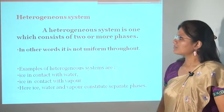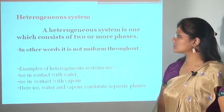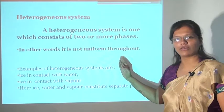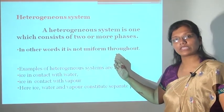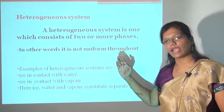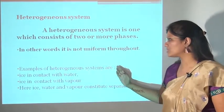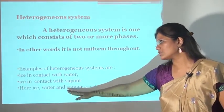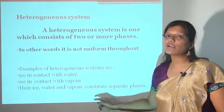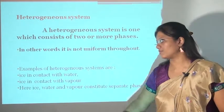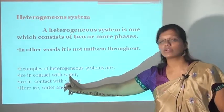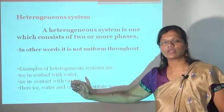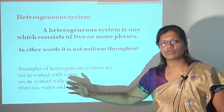Now, what is a heterogeneous system? A heterogeneous system is one which consists of two or more phases. In other words, it is not uniform throughout — the phase of the system changes from starting point to end point. Examples of heterogeneous systems are ice in contact with water, ice in contact with vapor, and ice, water, and vapor existing in separate phases. Ice is a solid form while water is liquid and vapor is gaseous — so from one phase to another phase it is changing, therefore it is known as a heterogeneous system.